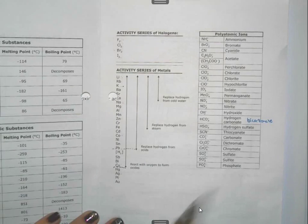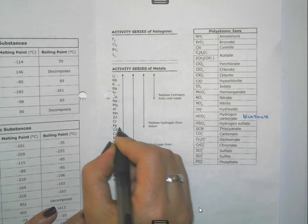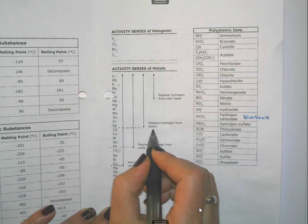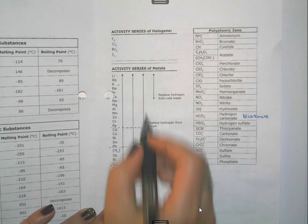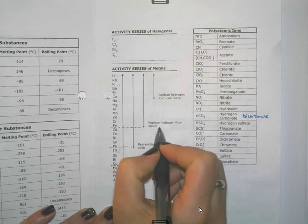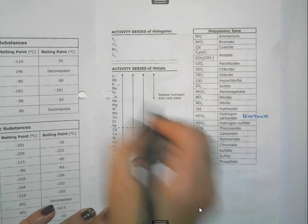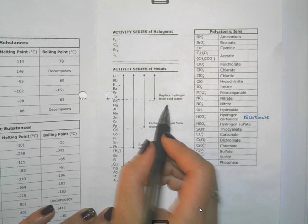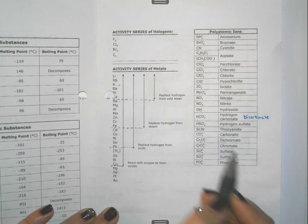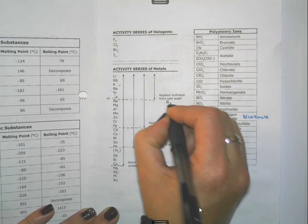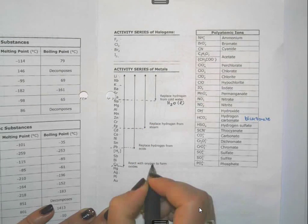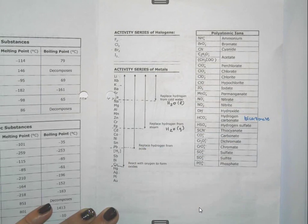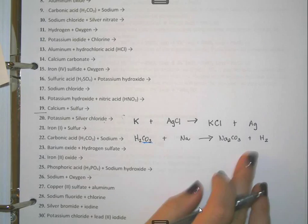While looking at the activity series: everything down to a certain point is willing to replace hydrogen from steam — it would react with gaseous water. Everything further down would do it with colder, liquid water. In your problem that would be written as liquid, and steam would be written as H₂O gas.